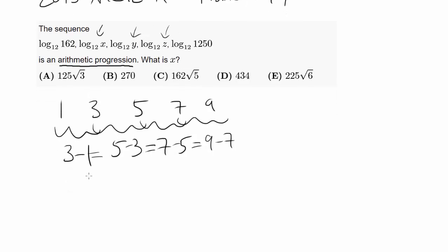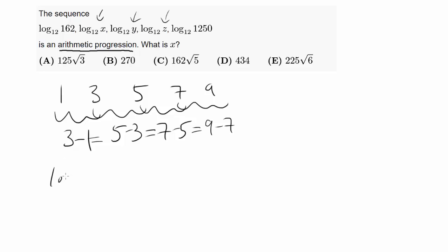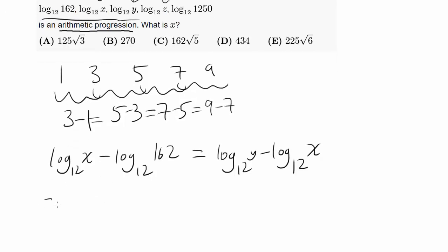So let's try to apply it. We know log base 12 of X minus log base 12 of 162 has to equal log base 12 of Y minus log base 12 of X. I'm just subtracting the consecutive terms, and so on. This is equal to log base 12 of Z minus log base 12 of Y, which is equal to log base 12 of 1250 minus log base 12 of Z.